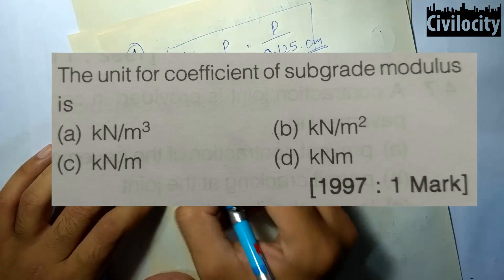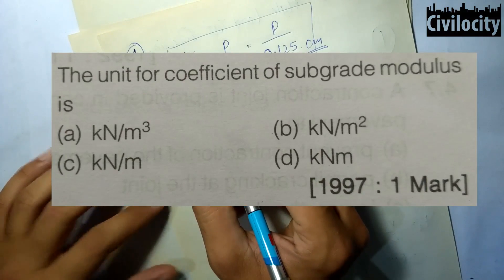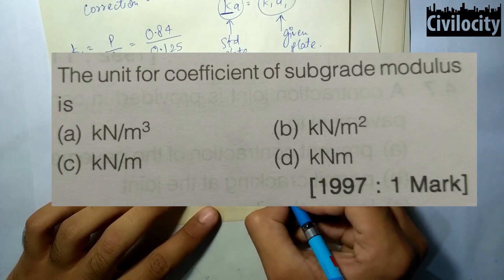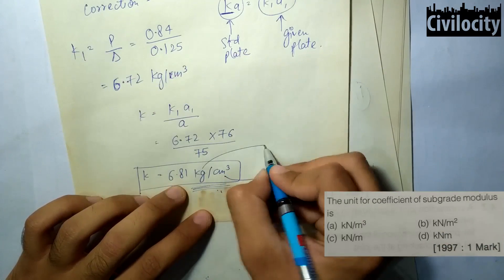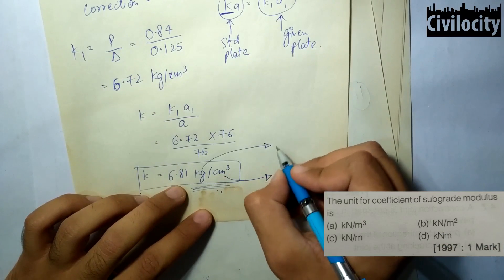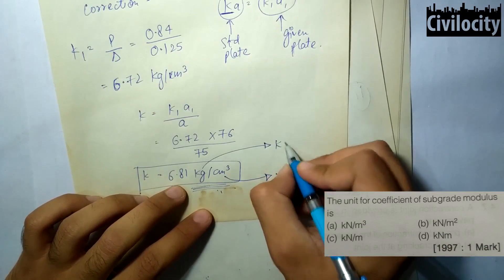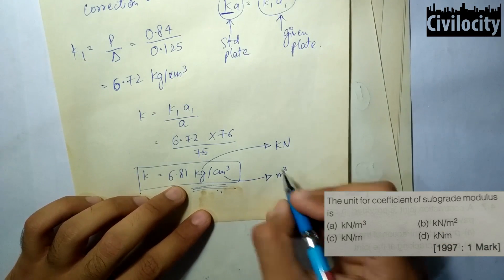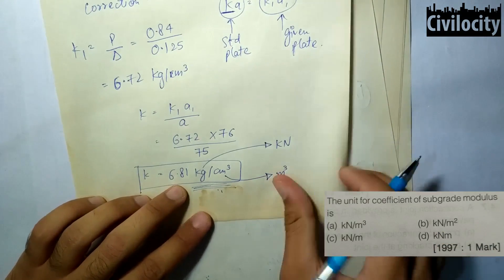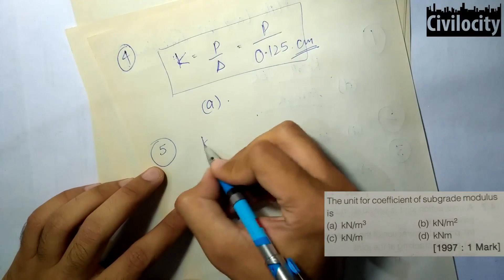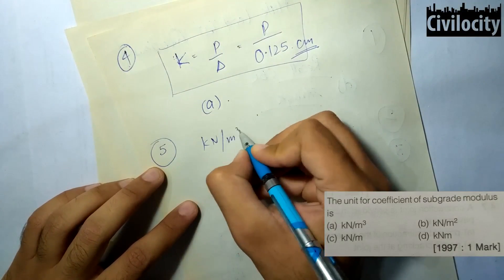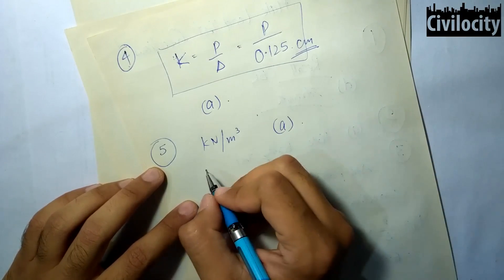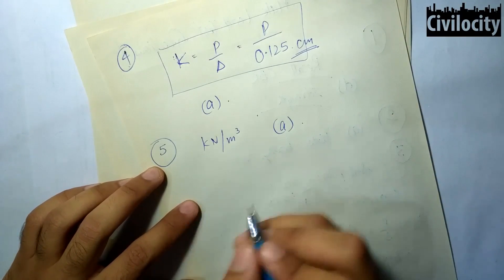The next question asks for the unit of the coefficient of sub-grade modulus. As seen in the third question, the units of modulus of sub-grade reaction are kg per cm³. If you replace the length unit cm by m, the units become kN per m³, which is the first option.